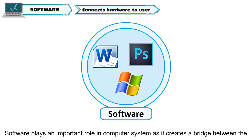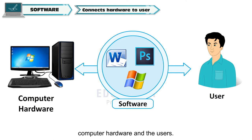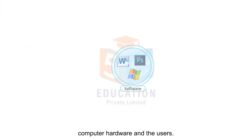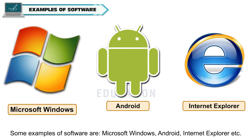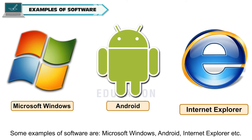Software plays an important role in a computer system as it creates a bridge between the computer hardware and the users. Some examples of software are Microsoft Windows, Android, Internet Explorer, etc.